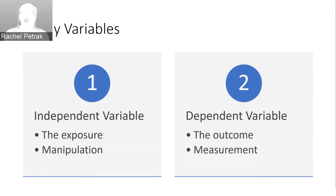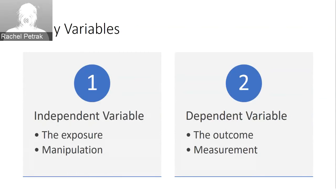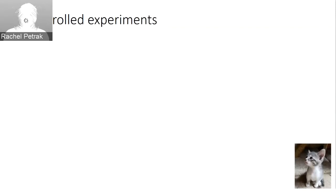The independent variable is the one that is the exposure. In a strict experiment, it's sometimes called the manipulation. The dependent variable is the variable that you are measuring — it's the outcome of interest. The participant's performance on the dependent variable is always measured as part of the study. This gives us a little terminology and framing as we walk through the rest of our discussion.